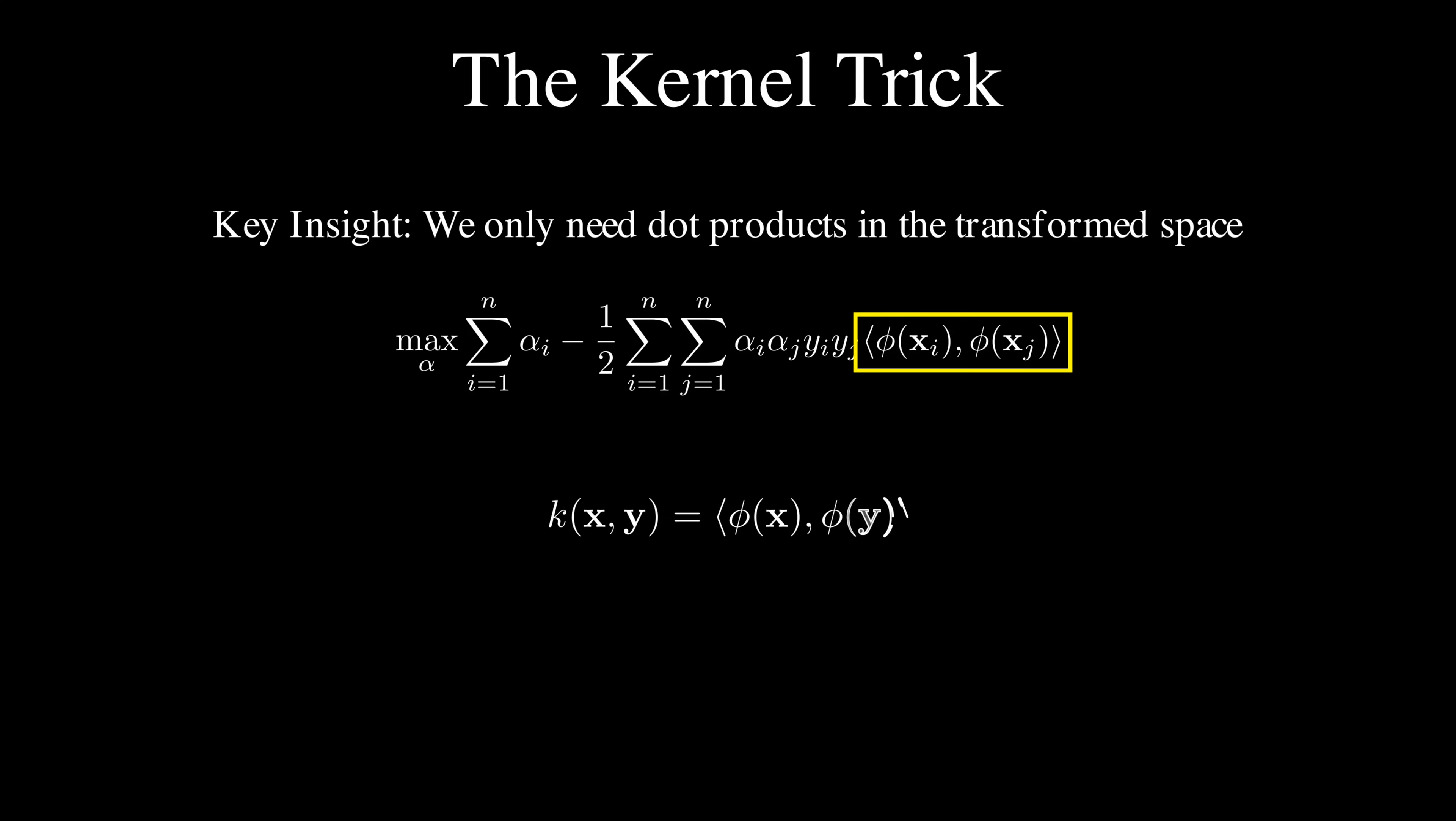We define a kernel function k(x, y) that equals the dot product ⟨φ(x), φ(y)⟩. Then, we can rewrite our optimization problem using this kernel function instead.